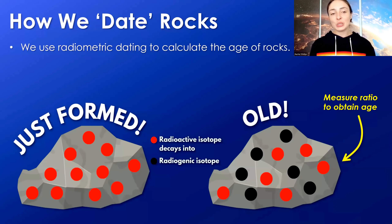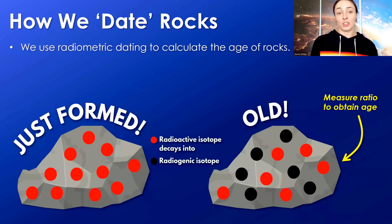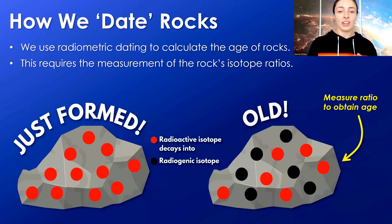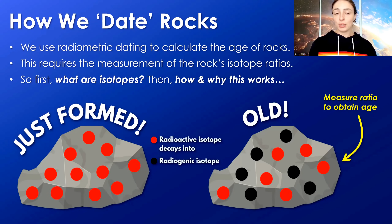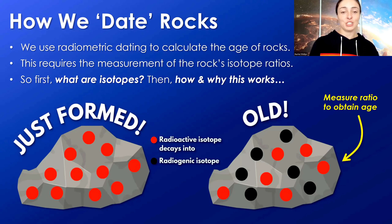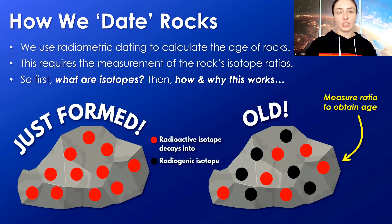Before I jump right into how isotopes reset, I want to lay the foundations of how we date rocks with radiometric dating — how it actually works to calculate an age for a rock. Basically, we can measure a rock's isotope ratio to then calculate its age. I'm going to briefly describe what isotopes are so we're all on the same page, and then I'll talk about how and why this isotope ratio measurement works to get an age for the rock.